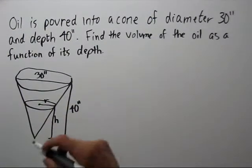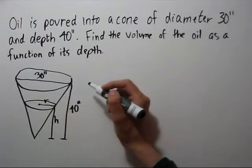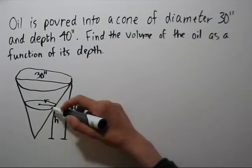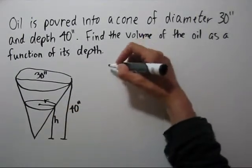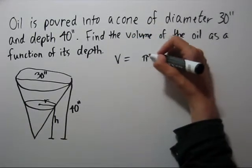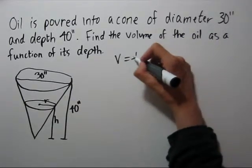So the volume of a pyramid is one third the base area times the height. This is upside down. Our base area is going to be pi r squared. Our height is h, and we take one third of that.